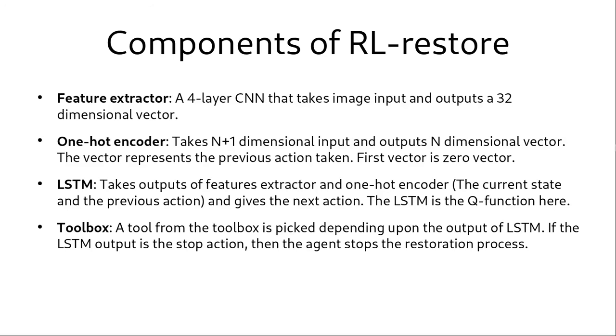Here we have few more details about the components of RL restore. We can see that the feature extractor is a four-layer CNN. And the one-hot encoder takes an n plus 1 dimensional input and outputs an n dimensional vector. The vector represents the previous action taken. And the first vector is the zero vector. The LSTM is the approximation of the Q function and takes the concatenated input of the feature extractor and one-hot encoder. The toolbox contains the small CNNs that are used for the restoration process. And depending upon the output of the LSTM, an appropriate tool from the toolbox is picked for restoration.